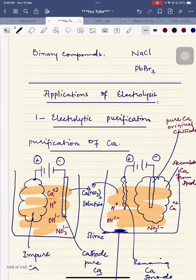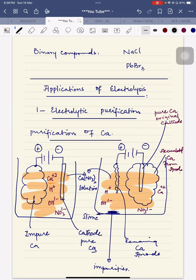We have discussed one application of electrolysis: electrolytic purification. We purify a metal using electrolysis. Impure metal is placed at the anode and movement is from anode to cathode, so pure metal accumulates at the cathode. The cathode increases in size, the anode decreases in size, and the solution remains unchanged — concentration of the solution remains unchanged. These are the key observations.